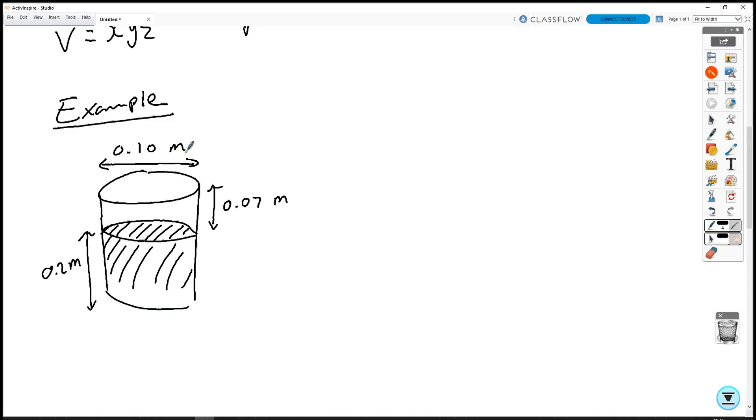So here we've got a paint tin with paint inside. The mass of the empty tin is equal to 0.3 kg. The total mass is equal to 5.0 kg.